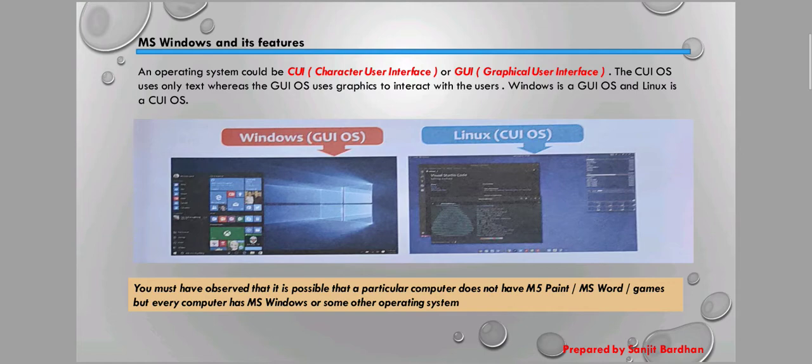In GUI, we can interact easily through graphics. Here you can see Windows, which is based on GUI, and Linux, which is based on a command-line interface. Windows operating system is graphics-based and Linux is command-based, meaning you type commands to give instructions to the computer.